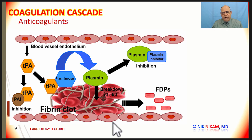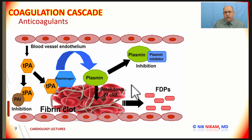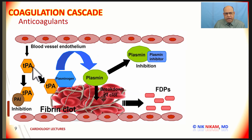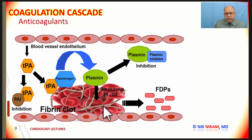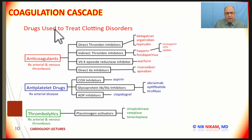Next we move on to tissue plasminogen activators or fibrinolytic agents, the most common of which is TPA, used in patients with STEMI who cannot undergo coronary intervention within the first 90 minutes after onset of symptoms. The tissue plasminogen activator activates plasminogen, which is converted into plasmin, which breaks down the fibrin network. That is why they are called fibrinolytic agents — they break down the clot and reestablish circulation.